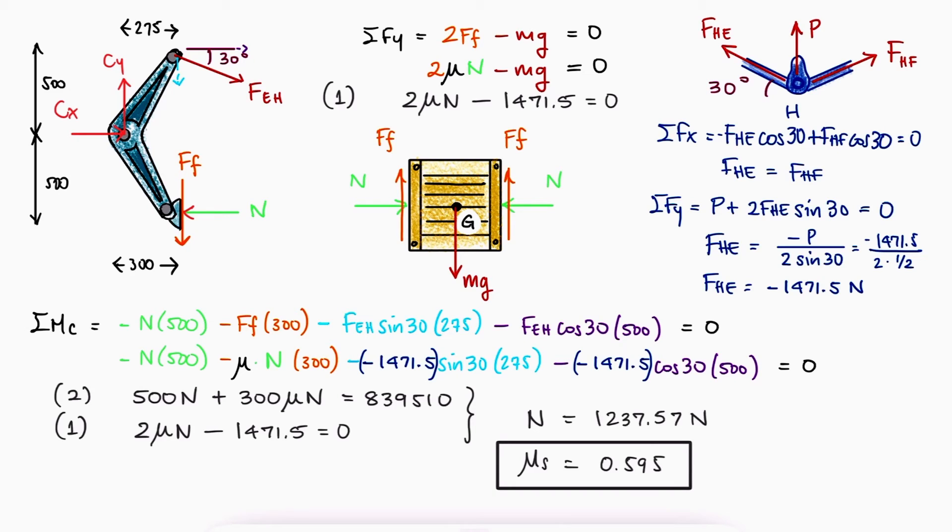This is the coefficient of friction that would be needed for the box not to slip from the tongs. The links to the other 2-minute example videos and the 10-minute main lecture videos from the statics course are found in the description below.